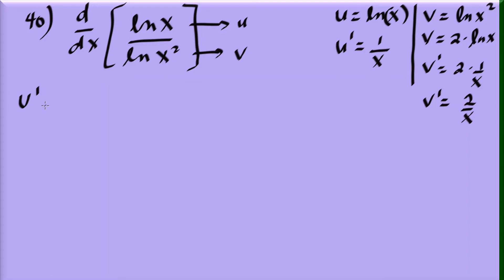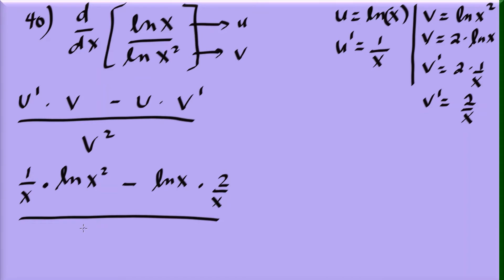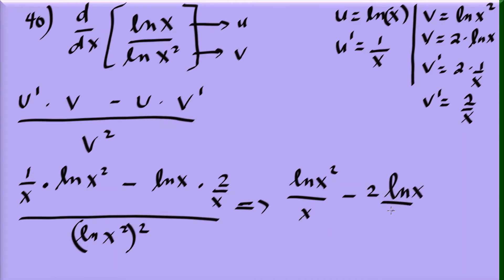The quotient rule says: (u prime times v minus u times v prime) all over v squared. Substituting: u prime is 1 over x, v is natural log of x squared, u is natural log of x, v prime is 2 over x. So the numerator is (natural log of x squared over x) minus (2 natural log of x over x), all over (natural log of x squared) squared.